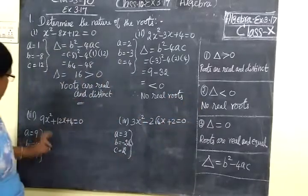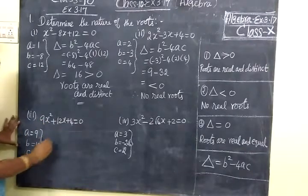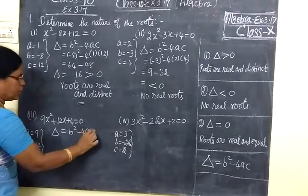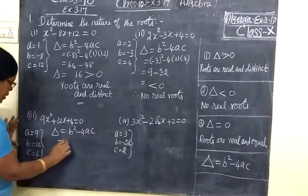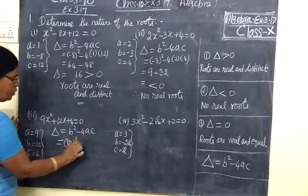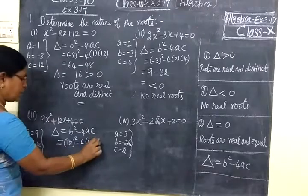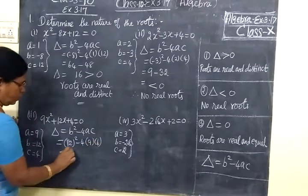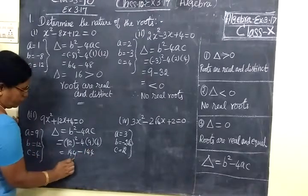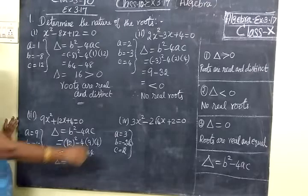Then the third one: 9x² + 12x + 4 = 0. Again, Δ = b² - 4ac equals (12)² minus 4 into 9 into 4, which is 144 minus 144. So Δ = 0.